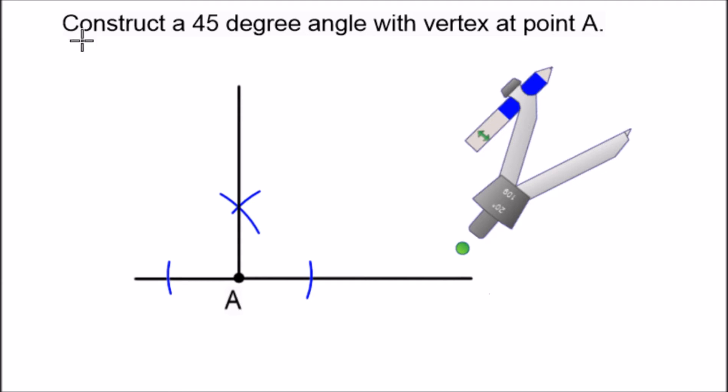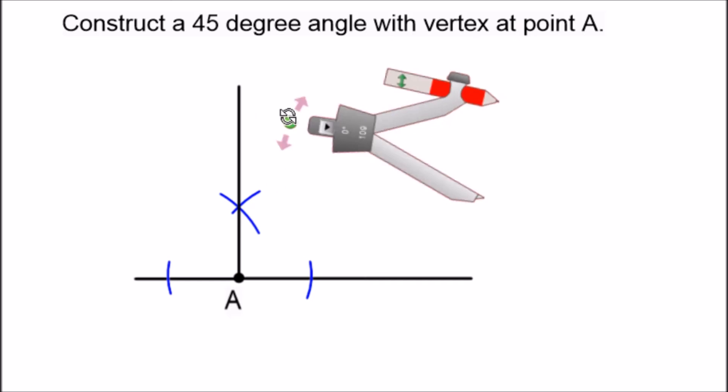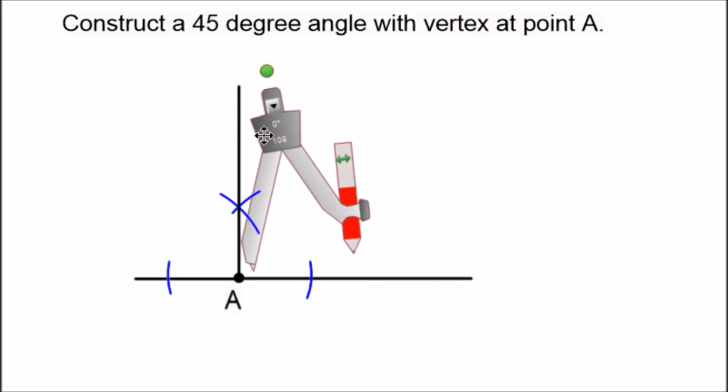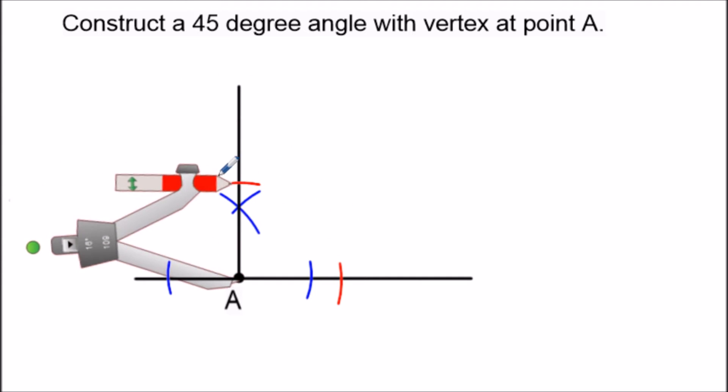So to close this out what we want to do is we're going to bisect this 90 degree angle because if we cut a 90 degree angle in half we'll have a 45 degree angle. So now we set the compass at point A and we swing an arc to hit one part of the angle and we repeat this process above to hit the other line segment that builds our right angle.